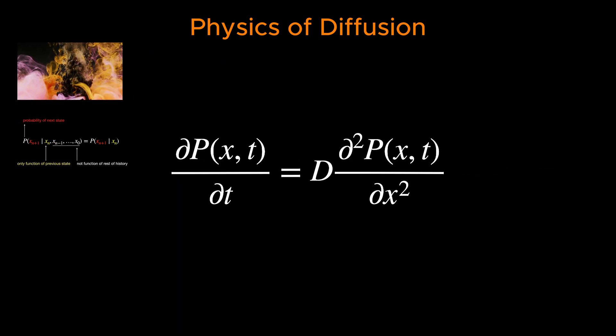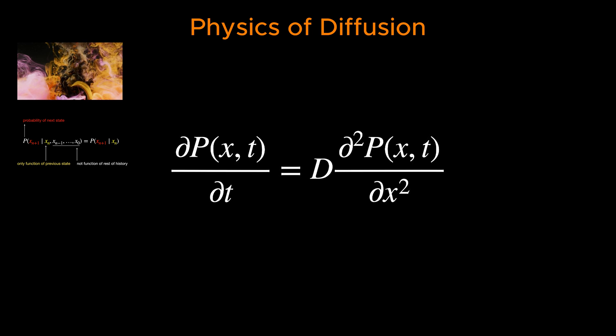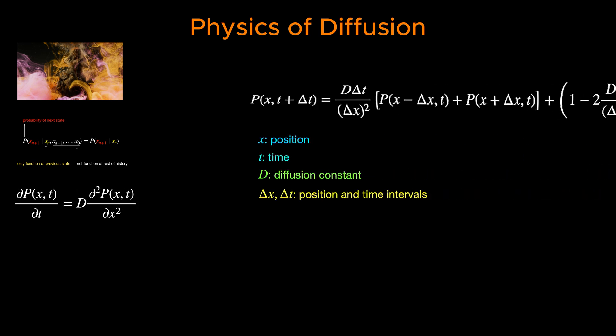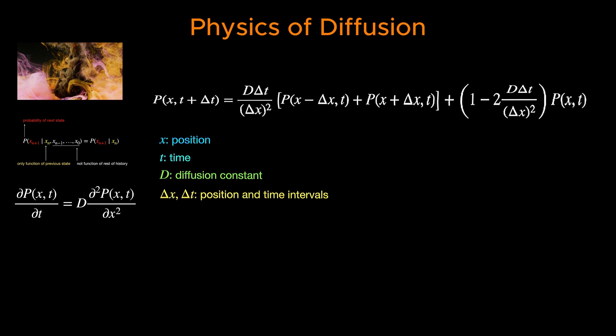In physics, diffusion refers to the process by which particles spread out in space due to random motion, such as the dispersion of molecules in a fluid. This random motion can be modeled as a stochastic process, which is where the connection to Markov chains arises.